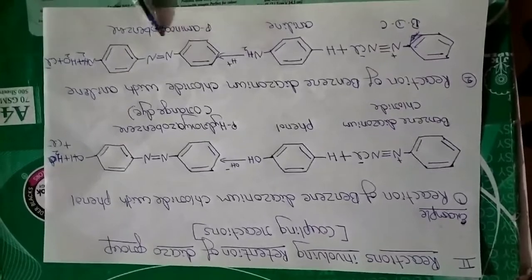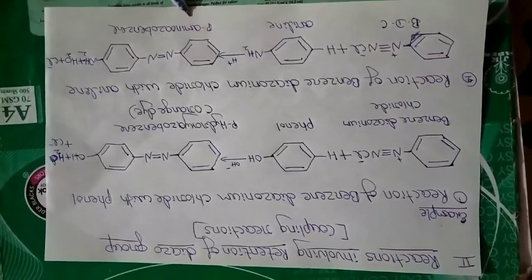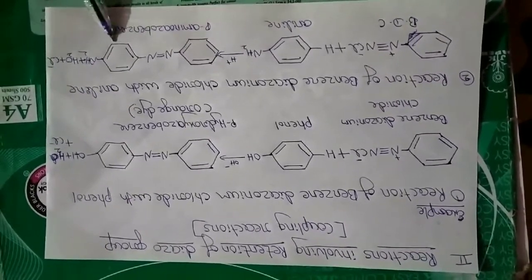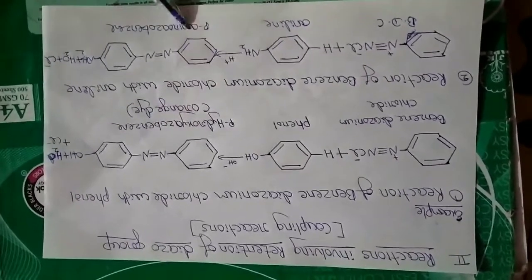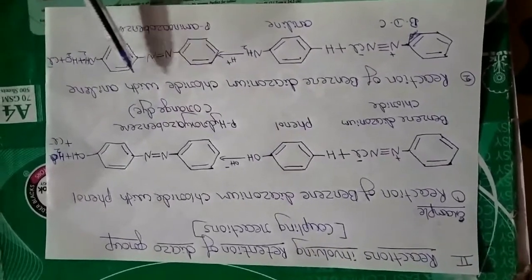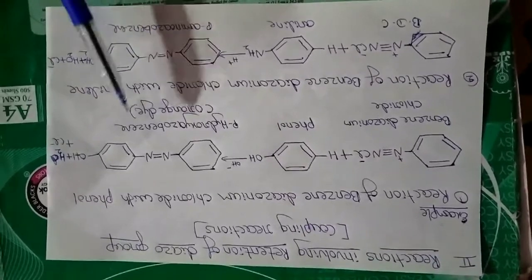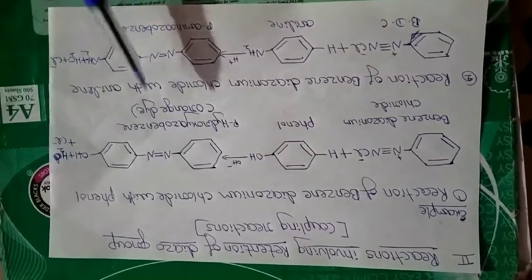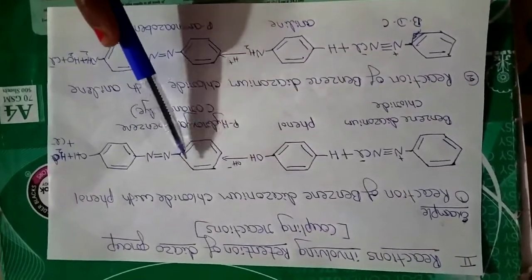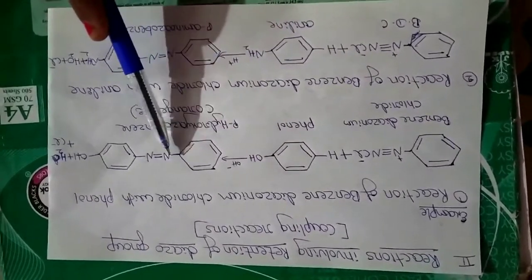This is yellow in color - it is a yellow dye. What is the reason for this color? The reason is extended conjugation. See: double bond, single bond, double bond, single bond, double bond, single bond - this alternating pattern creates extended conjugation.